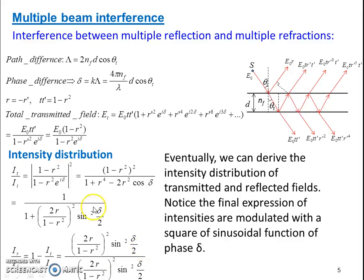In these two cases we can notice easily that the intensity distribution is modulated with the sinusoidal square of the sinusoidal functions of the phase term, and also one more term is present which is the reflectivity.